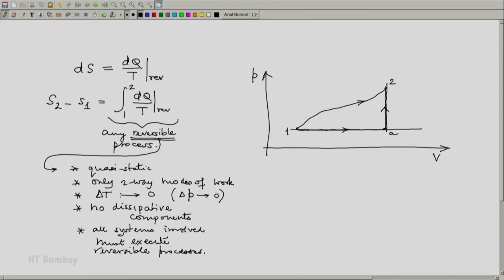This could be one possibility. Another possibility is take a constant volume line from 1, a constant pressure line from 2 and decide that we will go first along the constant volume line to b then to 2.